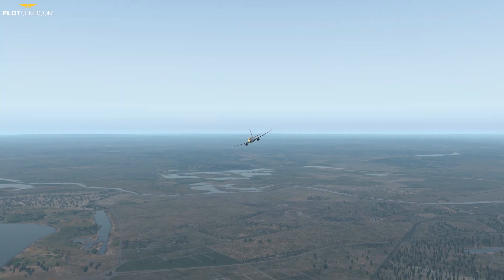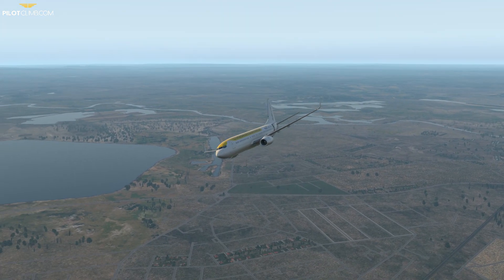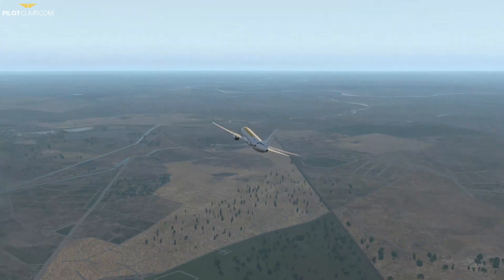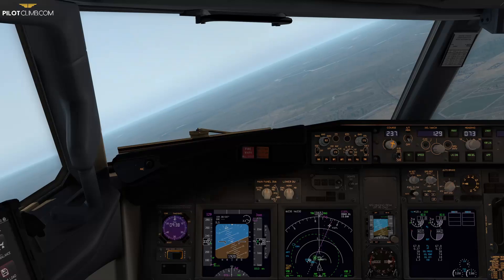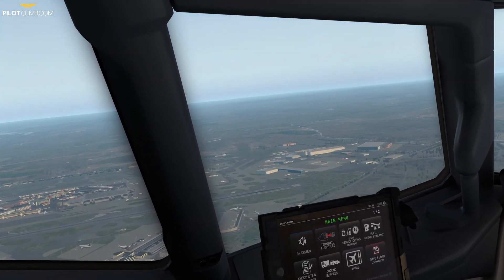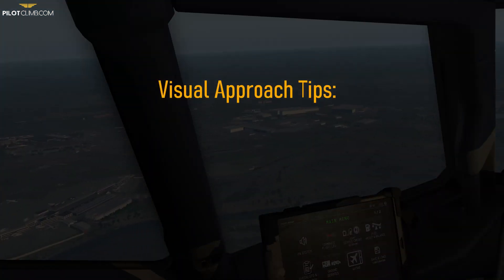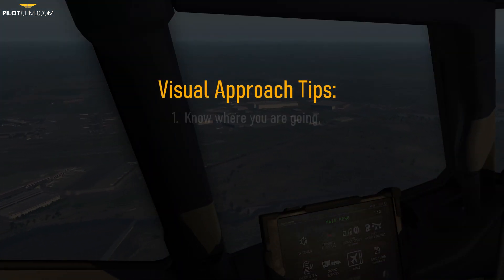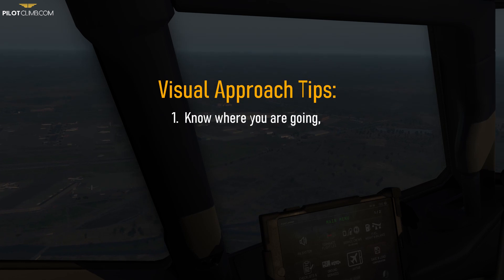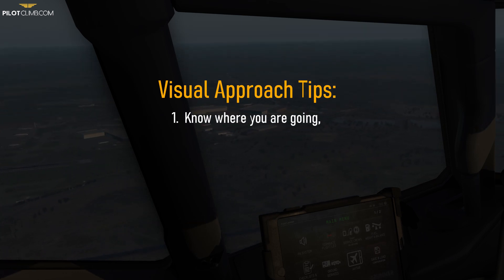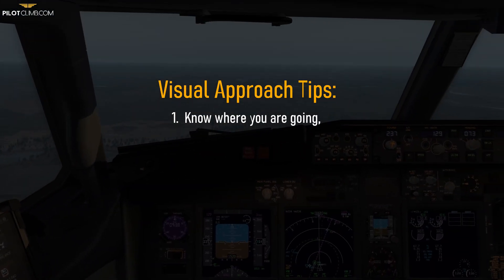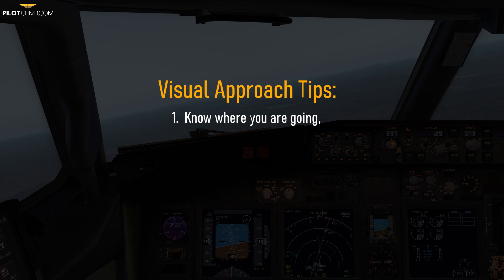Now that you know what a visual approach is, let me give you some advice for your next one. The first piece of advice is: make sure you know where you're going. Pay particular attention to multiple-runway airports and identify the landing runway. This is especially true if the airport has runways such as 27L and 27R — make sure you identify your landing runway, left or right.